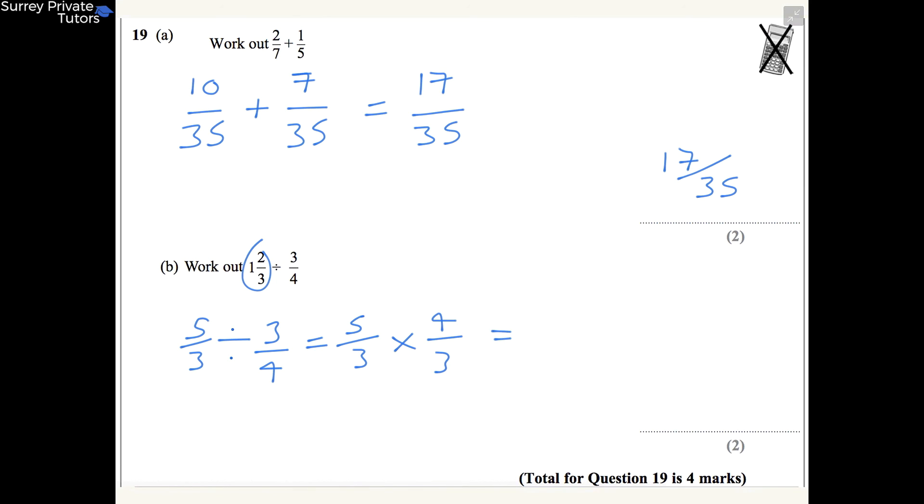And then the top, 5 times 4, becomes 20, and 3 times 3 becomes 9. And we can't simplify this any further either, so we get 20/9 for part B.